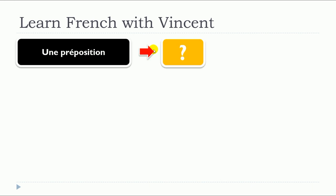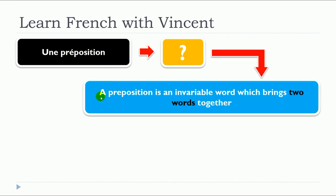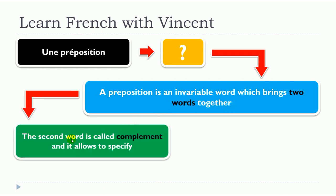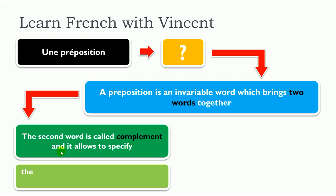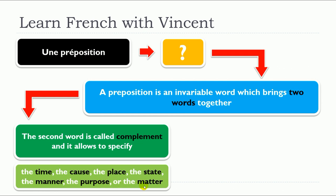So, of course, the first thing that we need to see together is « what is une préposition ? ». Well, a preposition is an invariable word which brings two words together. The second word is called « complement » and it allows to specify the time, the cause, the place, the state, the manner, the purpose or the matter.